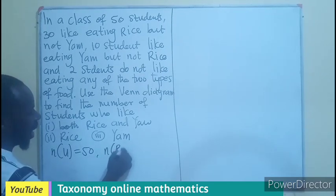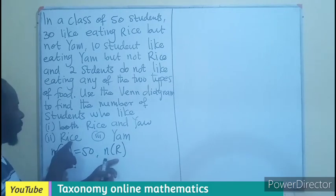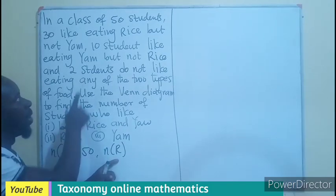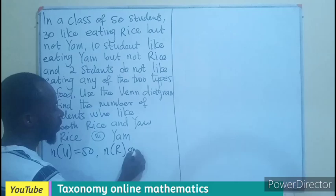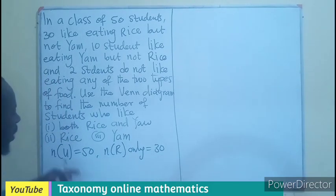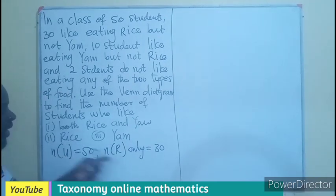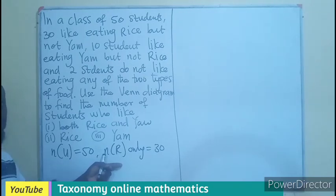If we are writing the preamble using the first letters to represent the given set, we know that U will be our universal set. It will be 50. Then, we are going to have R will represent rice. Now, rice is the one we are asked to find here, but the one we are given in the question is rice only.